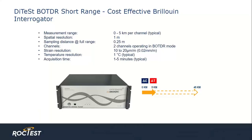The DITES short range unit is the new entry-level interrogator designed to meet the increasing demand for distributed sensing. It is cost and performance optimized for a maximum sensing cable length of up to five kilometers per channel. This enables the implementation of distributed sensing technology for small to medium scale monitoring projects. It is a reliable, optimized, entry-level interrogator for short range applications.